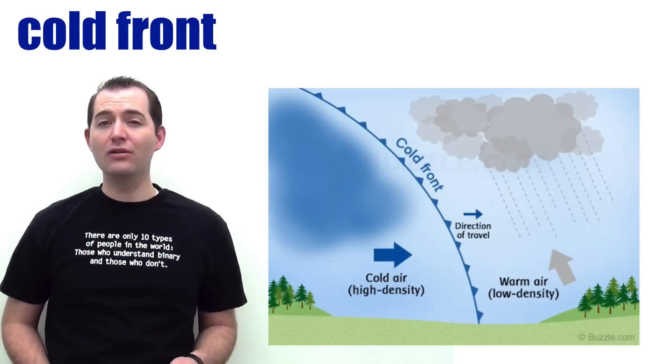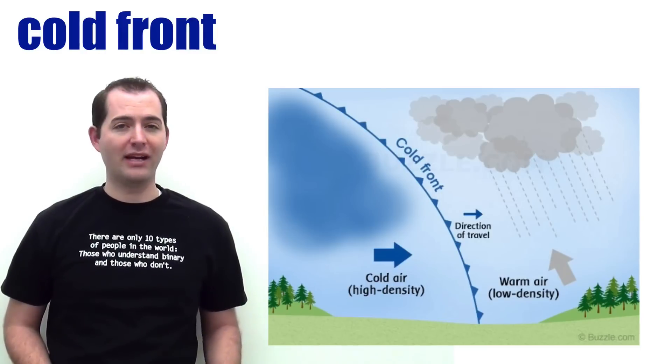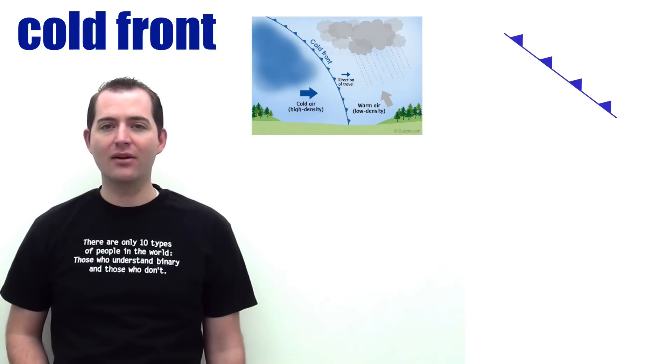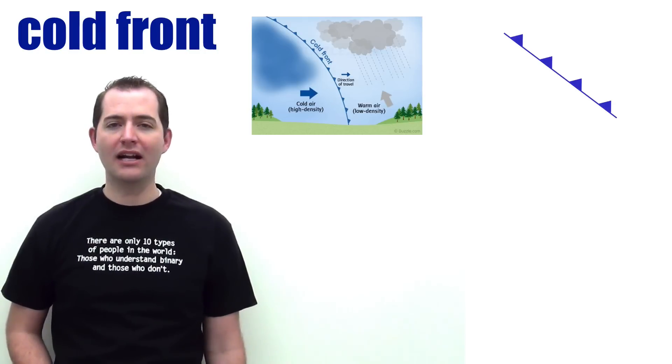A cold front is where cold air pushes up against warm air. A cold front is represented on a weather map with a blue line with blue triangles pointing towards the warmer air.